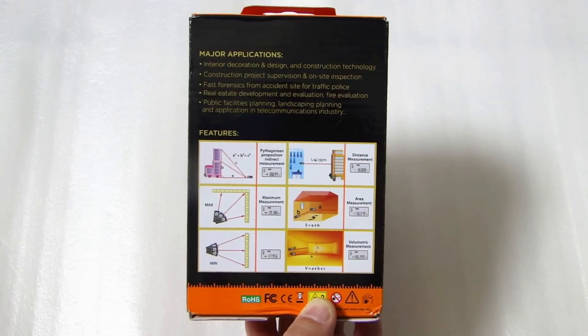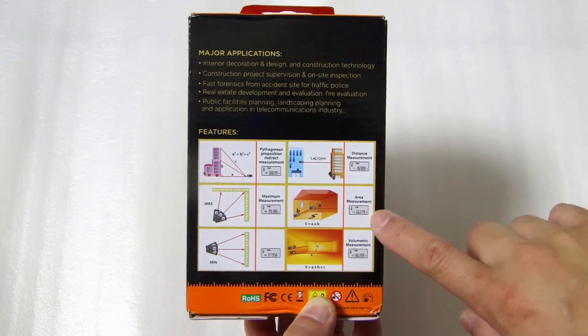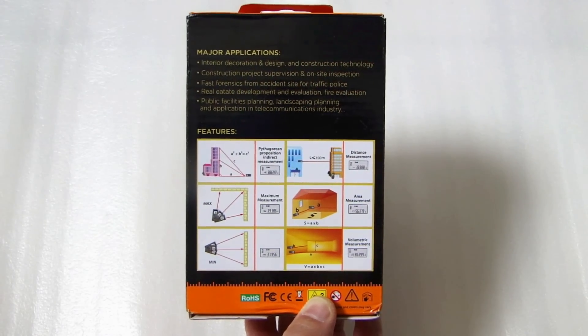On the back of the box it shows you the different type of measurements it can take. You can measure distance, area, and volume. So let's open this up and I'll show you what's inside.